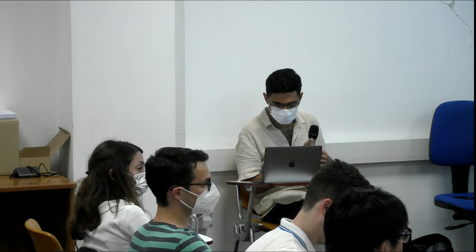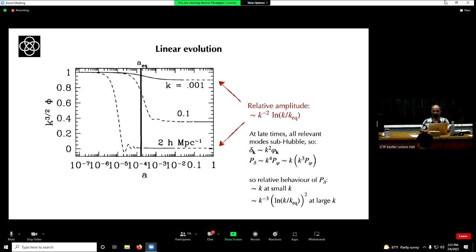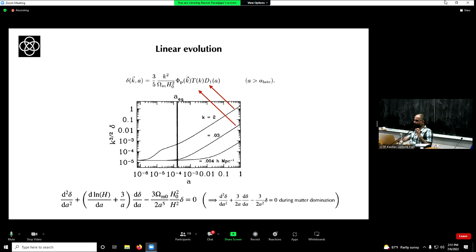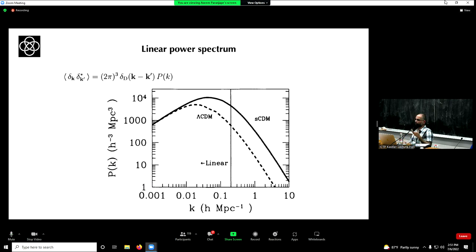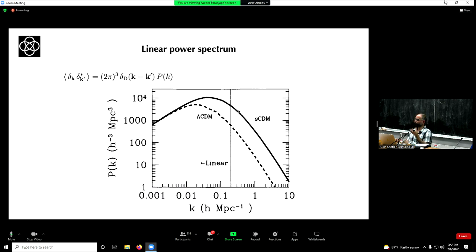What does the linear power spectrum represent physically? The power spectrum is a statistical probe combining information about the evolution of different modes together with knowledge of initial conditions. Different parts probe different physics: the low-k part directly probes primordial structure; the high-k part probes what happened during radiation domination; the peak probes background cosmology via K_equality. With baryons included, there would be oscillations on top — baryon acoustic oscillations — probing baryon-photon interactions. Those are the different physical quantities probed by the power spectrum.